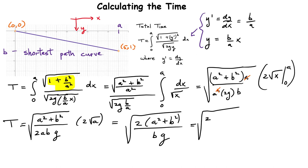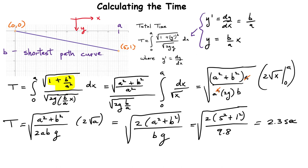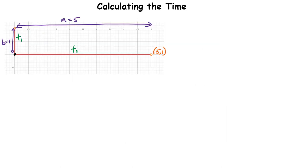The straight-line result of 2.3 seconds is nearly 0.9 seconds slower than the brachistochrone curve. The shortest geometric path is far from the fastest path for this problem.